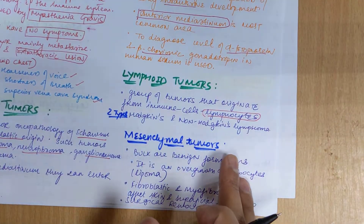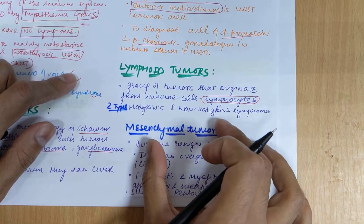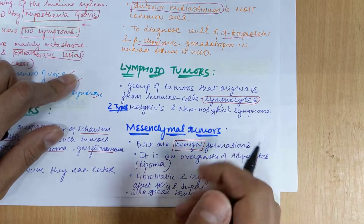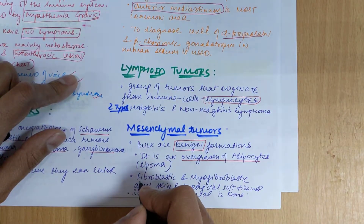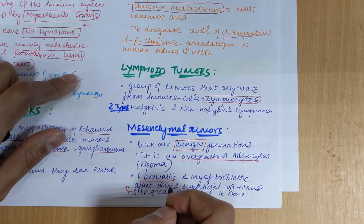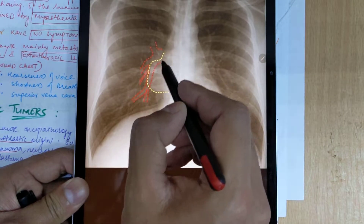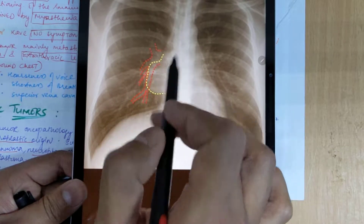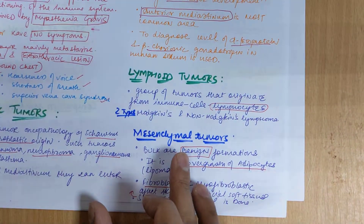Mesenchymal tumors originate from skin, soft tissues, or superficial tissues. These tumors are mostly benign and rarely convert to malignant. An example is lipoma, which is an overgrowth of adipocytes in soft tissues. Others include fibroblastic or myofibroblastic tumors affecting skin and superficial soft tissues. Treatment involves surgical resection. In the mediastinal image you can see lipoma as a dilated soft tissue region due to deposition of fatty cells.